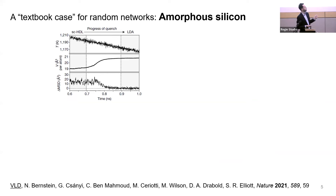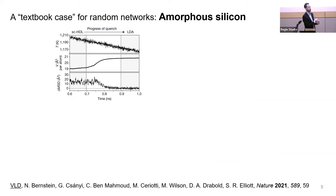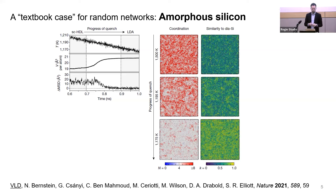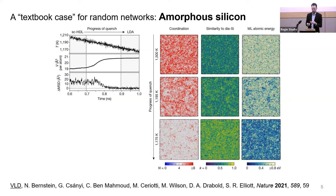We make many of our structure models by simulated quenching from the melt: we take liquid silicon and cool it very slowly over many thousands of simulation steps. You can see the temperature slowly going down and the volume going up as the structure changes from a liquid to an amorphous state. Silicon, like water, expands when it freezes — atoms stop moving, and we go from a highly connected metallic liquid to the fourfold connected amorphous structure.